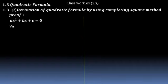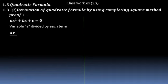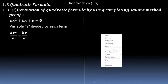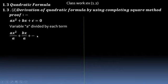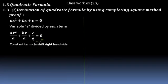Proof: ax² + bx + c = 0 is the standard quadratic equation. Divide each term by a: ax²/a + bx/a + c/a = 0. Then shift c/a from the right-hand side — its sign will change to minus c/a.